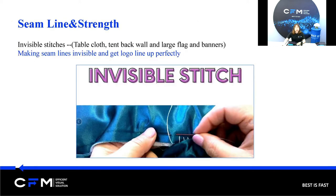In the final part, let's talk about seam lines and strength. Besides the common and unique stitch methods, seam lines are also a point that cannot be ignored. As mentioned in the previous webinar, the max width for material and machine is 160 to 320 cm. If the size is over the limit, we will need several pieces of fabric sewn together. So for teardrop banners, taper curls, and large flags and banners, we will have seam lines. Here, we use invisible stitches to make seam lines invisible and get the logo lined up perfectly.